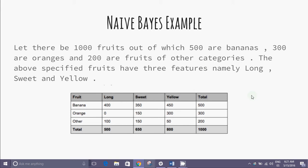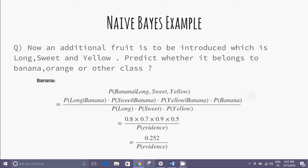Enough of theoretical knowledge, let us discuss an example now. There are 1000 fruits out of which 500 are bananas, 300 are orange, and 200 are fruits of other categories. Various features we take into consideration are long, yellow, and sweet respectively. It's given that a fruit is long, sweet, and yellow. We need to predict to which class it belongs.